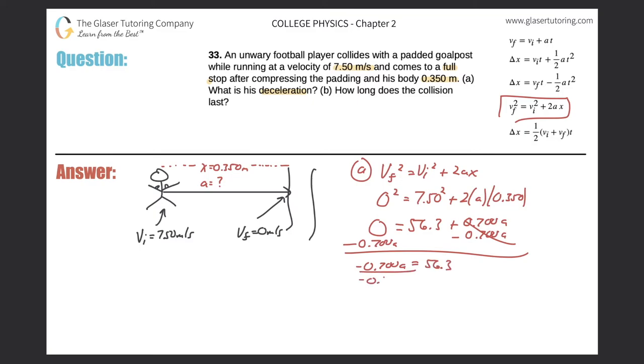Now divide this out. Negative 0.700A. So now my A value should be 56.3 divided by 0.7. So that works out to be approximately negative 80.4 meters per second squared. All right. So remember three significant figures because I divided two numbers that each had three significant figures. So that's part A.